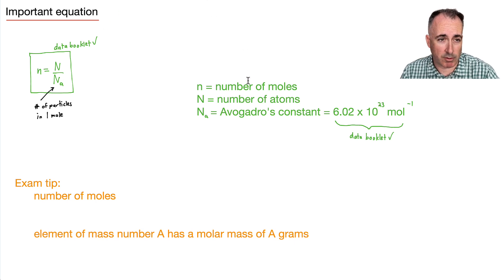Well, n is what's called the number of moles. That's an important thing in chemistry at least, and we certainly need it in physics. Capital N is the number of atoms present in total. And NA, like I said, is the number of particles per mole. That's what we call Avogadro's constant. So that's 6.02 times 10 to the 23 particles per mole. And that's in your data booklet.